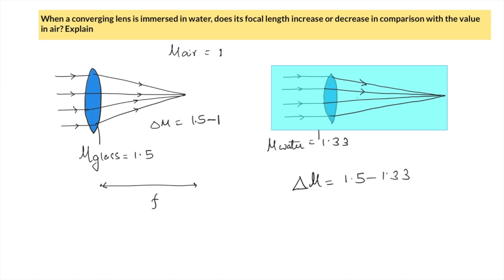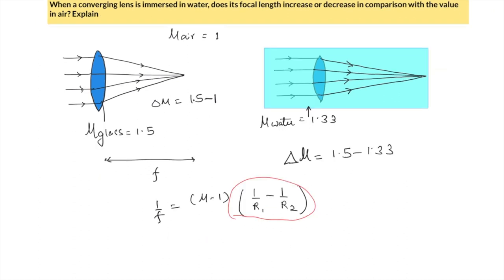Let us look at it from the point of view of the equation. Let us not focus on this part of R1 and R2, which is the radius of curvature of side 1 and side 2, as it is not changing. What is changing is this μ.